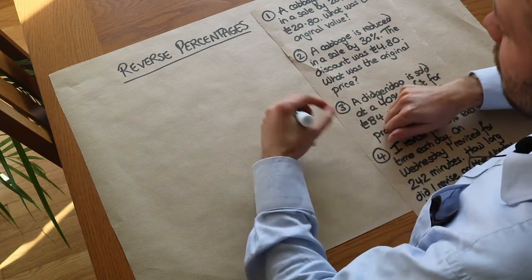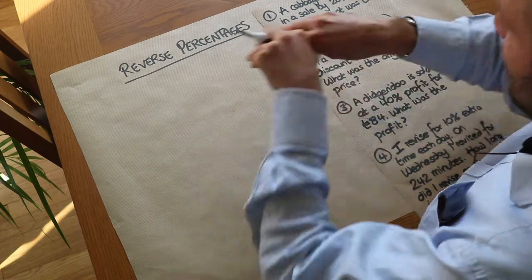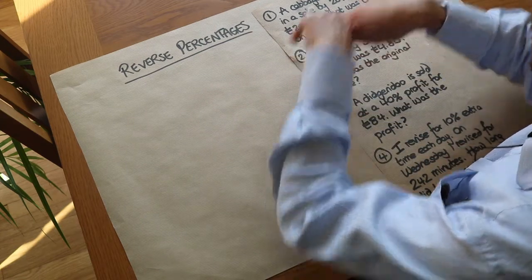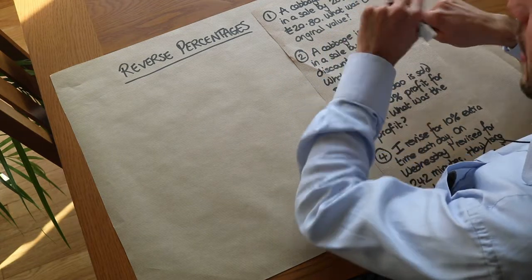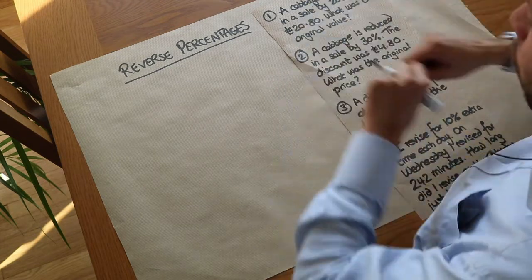We've seen in previous videos, if we have an initial amount and we've got the percentage change, how do we find the value after that percentage change? But this time we want to find the value before that change.